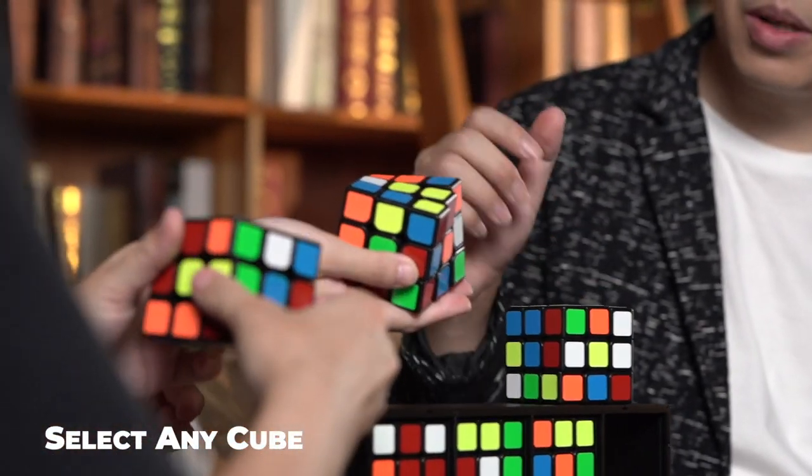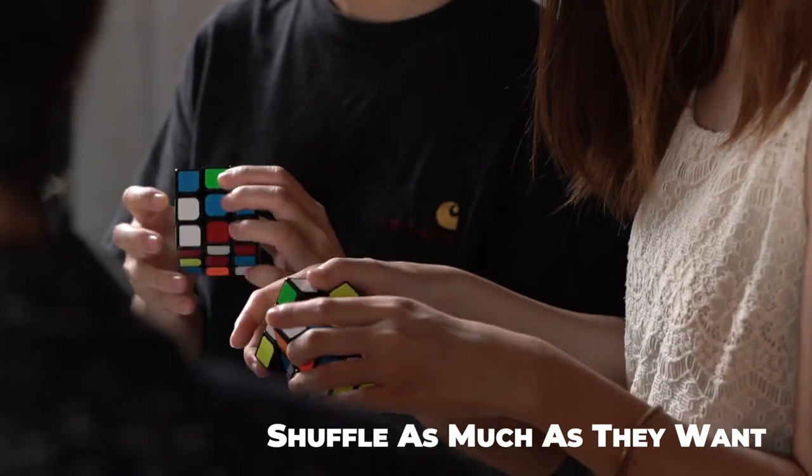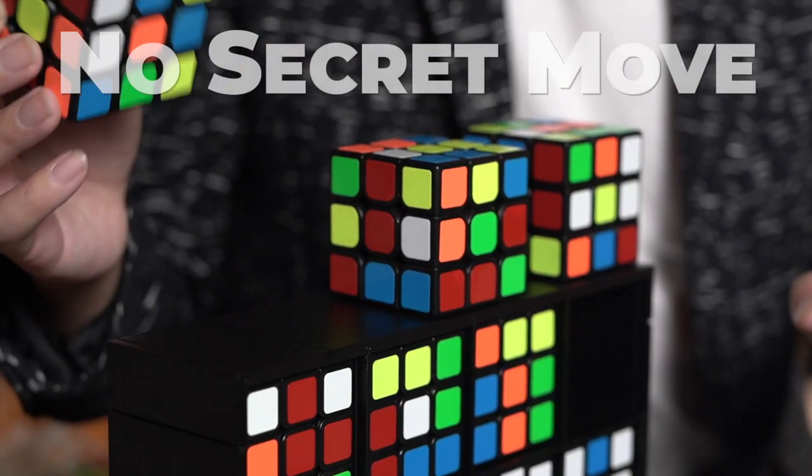The spectator can choose any cube they like. They can shuffle as much as they want, with no secret move.